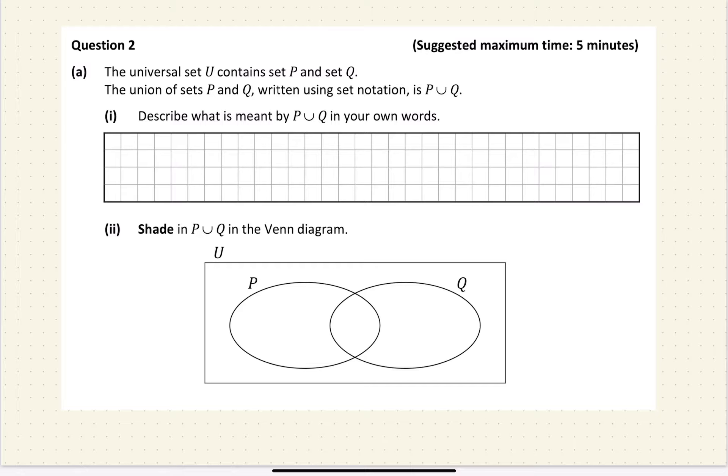Okay, so this was question two of your mock exam, and it was a sets question. The universal set U contains set P and set Q. The union of sets P and Q, written using set notation, is P union Q.